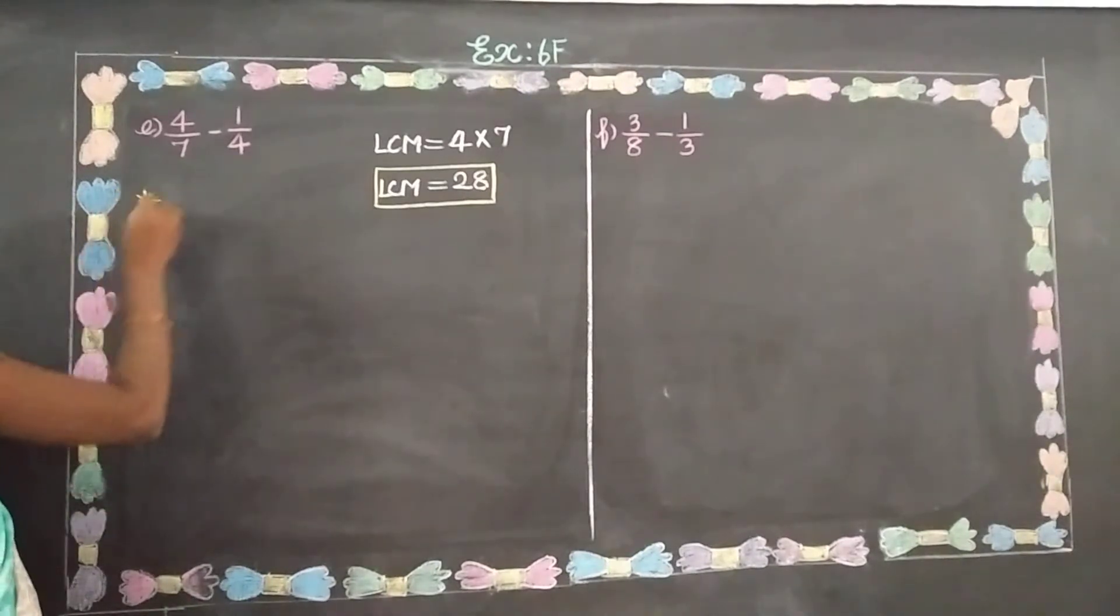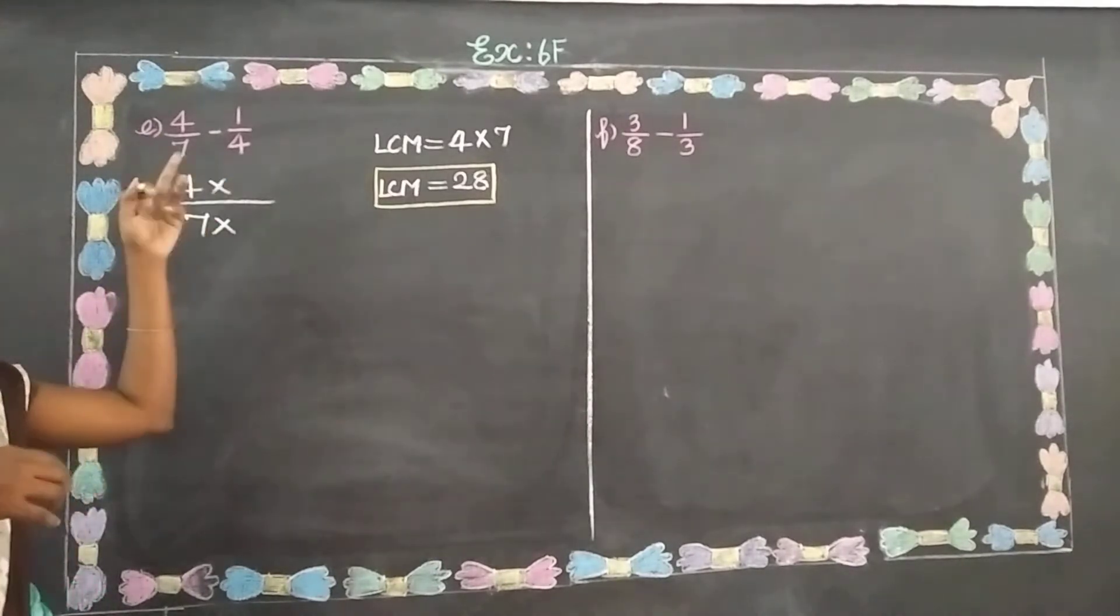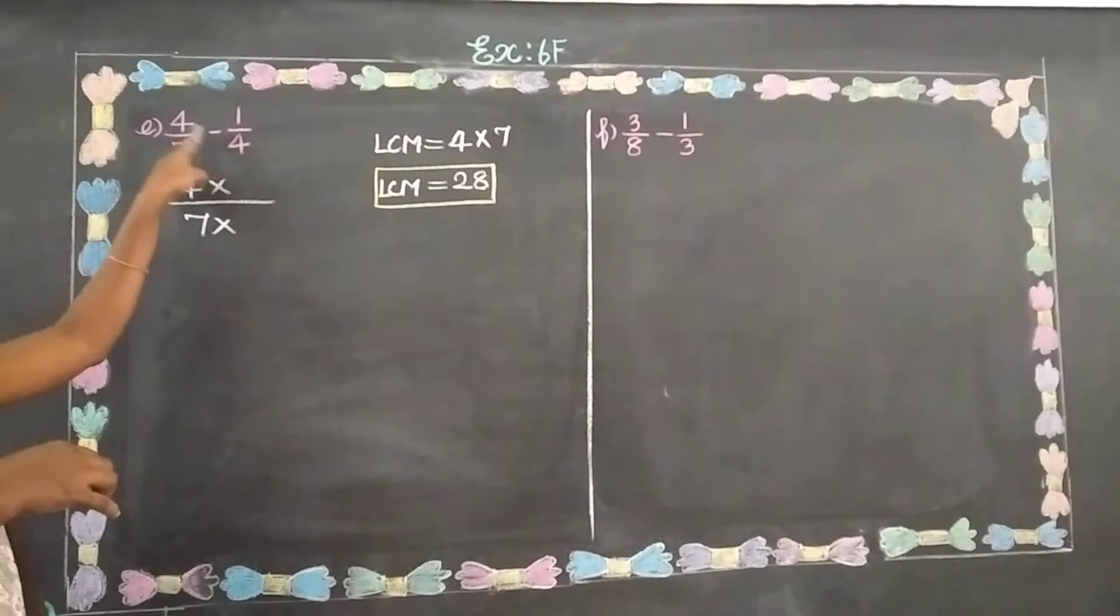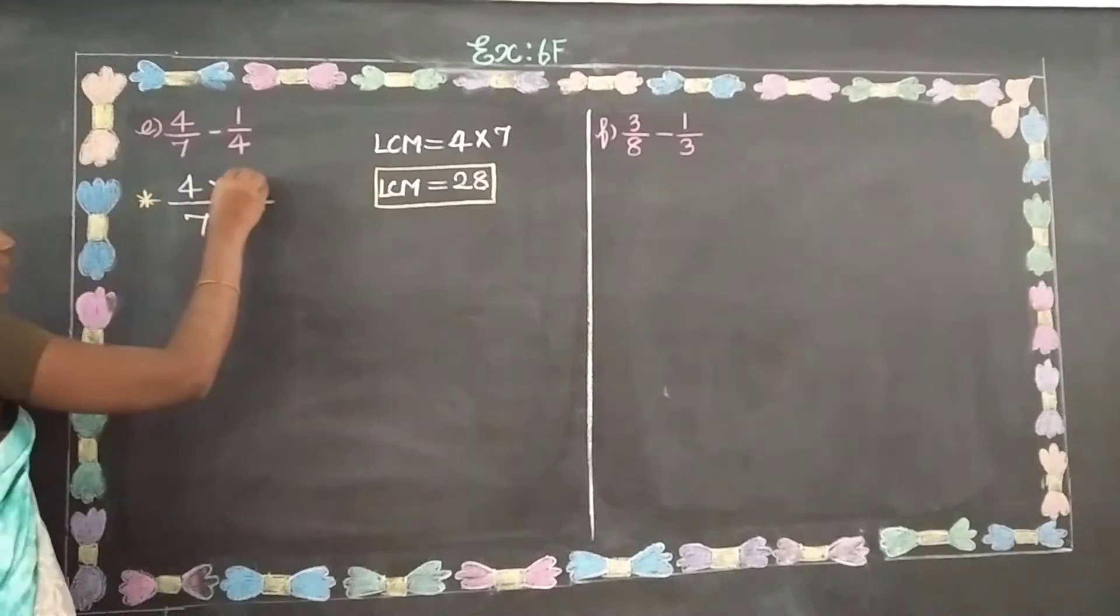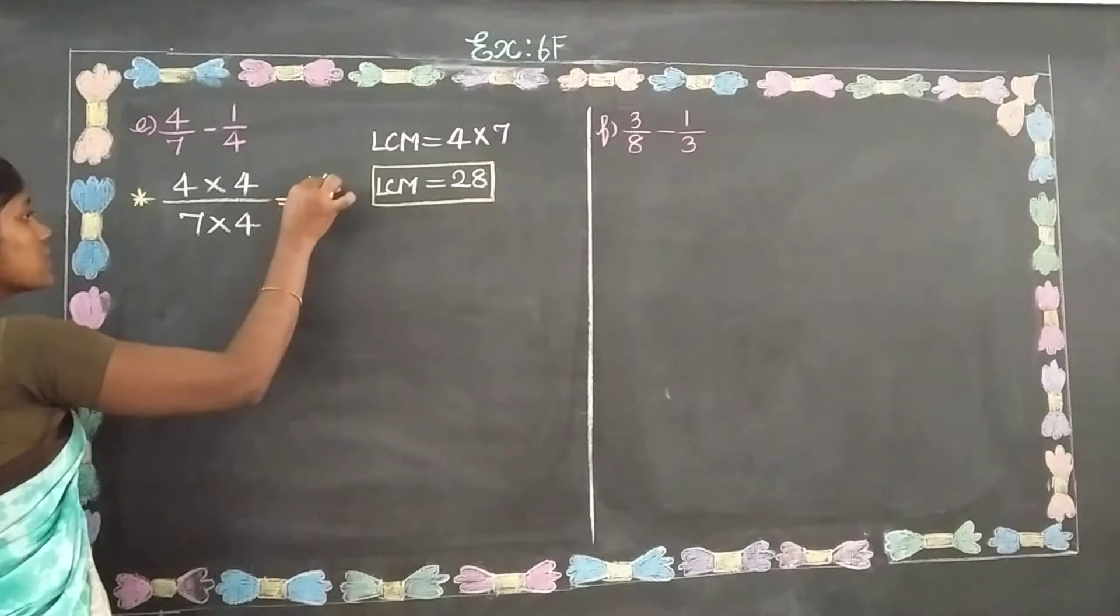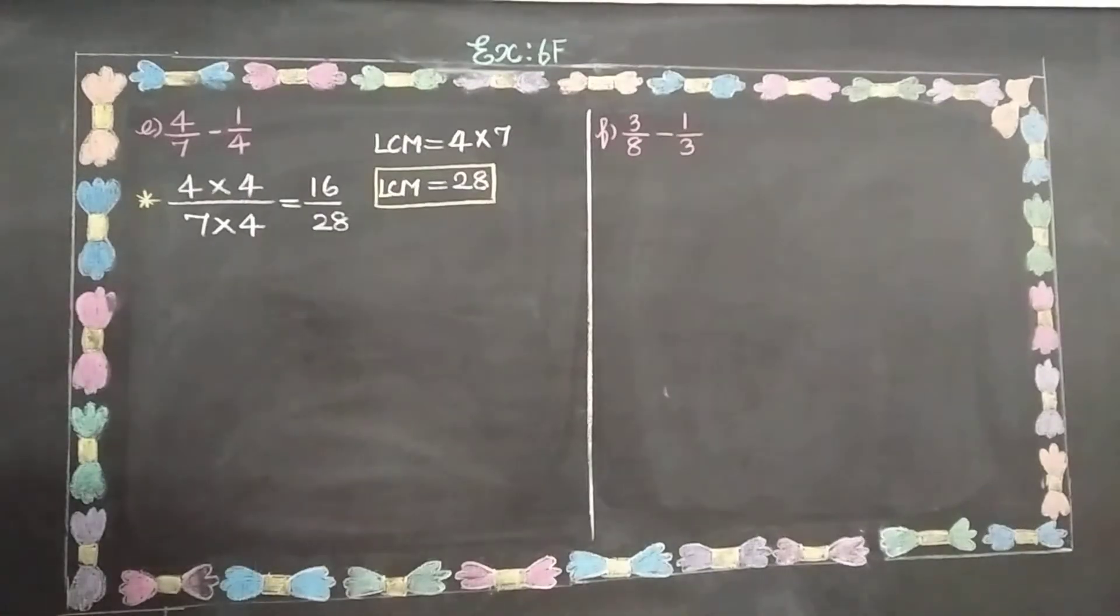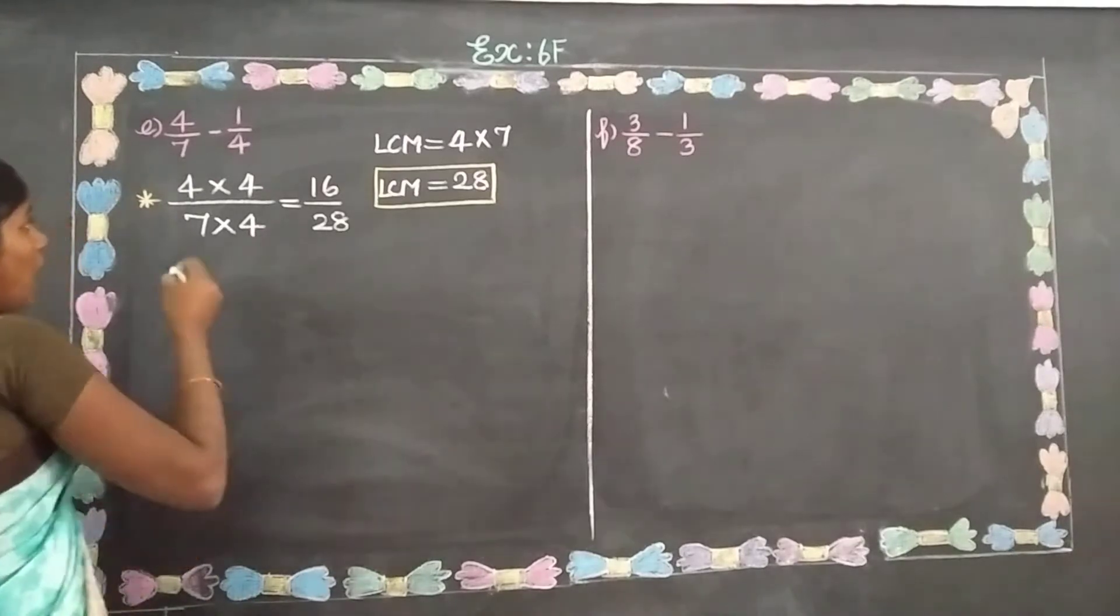4 by 7, 7 times what multiple equals 28? Cross multiple. 4 times what multiple? So 4 fours are 16. 16 by 28.